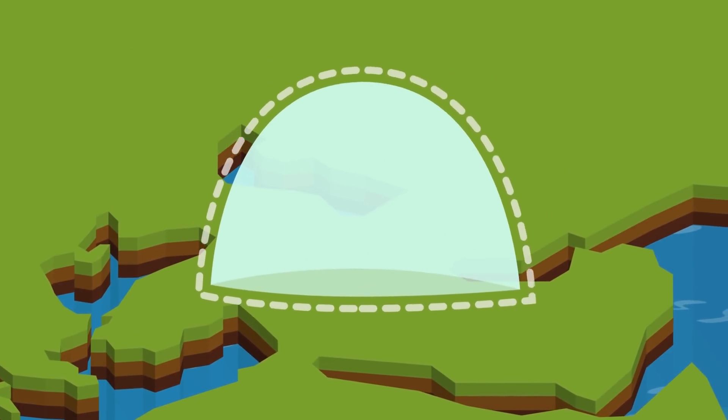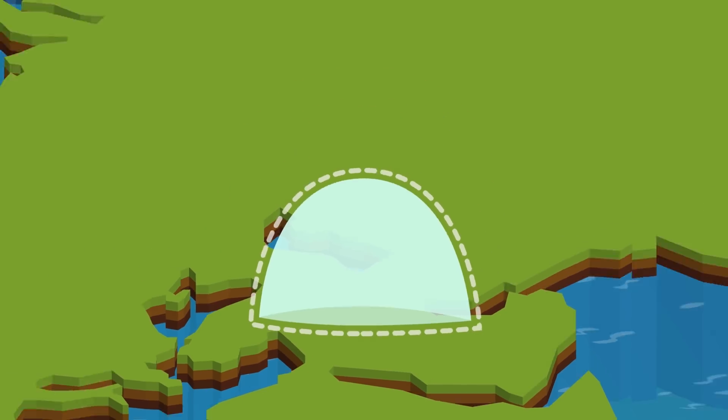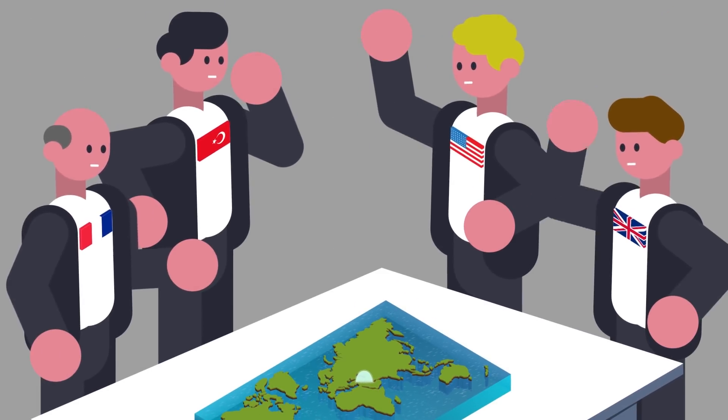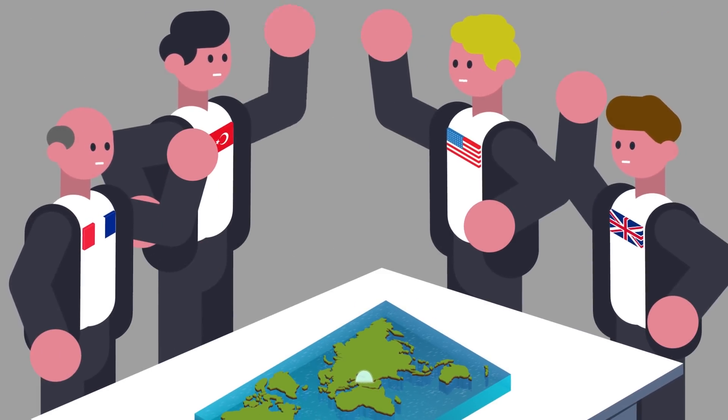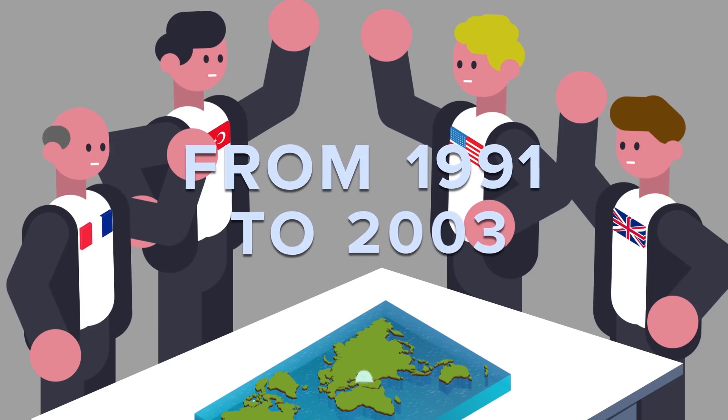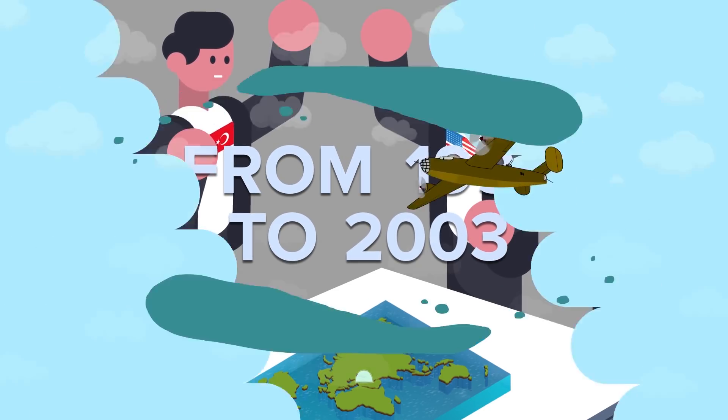Past no-fly zones include the one enacted by the United States, Great Britain, France, and Turkey over northern Iraq from 1991 to 2003.